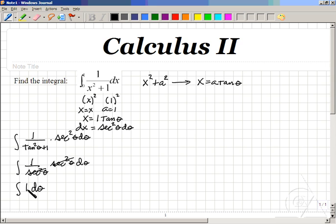The anti-derivative of 1 would become theta. The derivative of theta would become 1, in other words. So our result so far is theta.